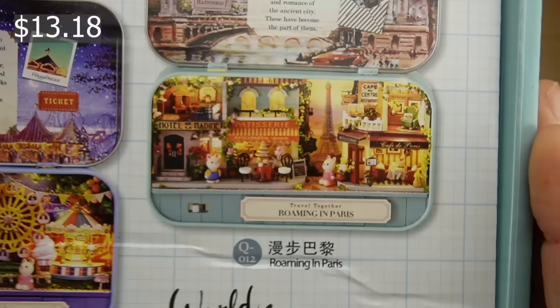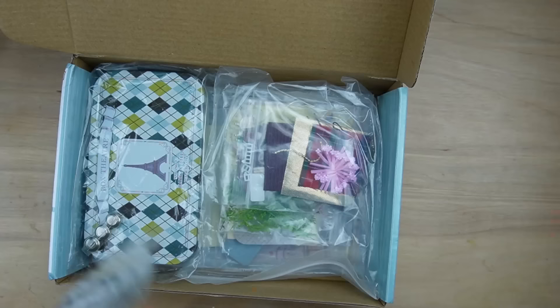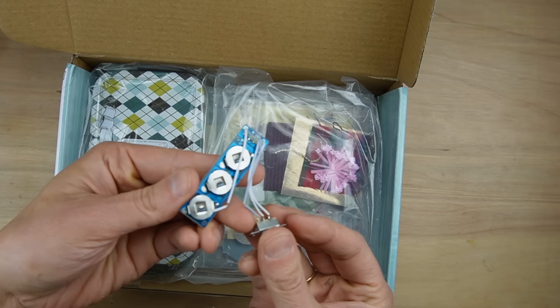Timu sells miniature kits you assemble inside of a little tin. This is the roaming in Paris version. The kit comes with this little electric looking thing and three batteries, so I'm assuming there are lights in this somewhere.